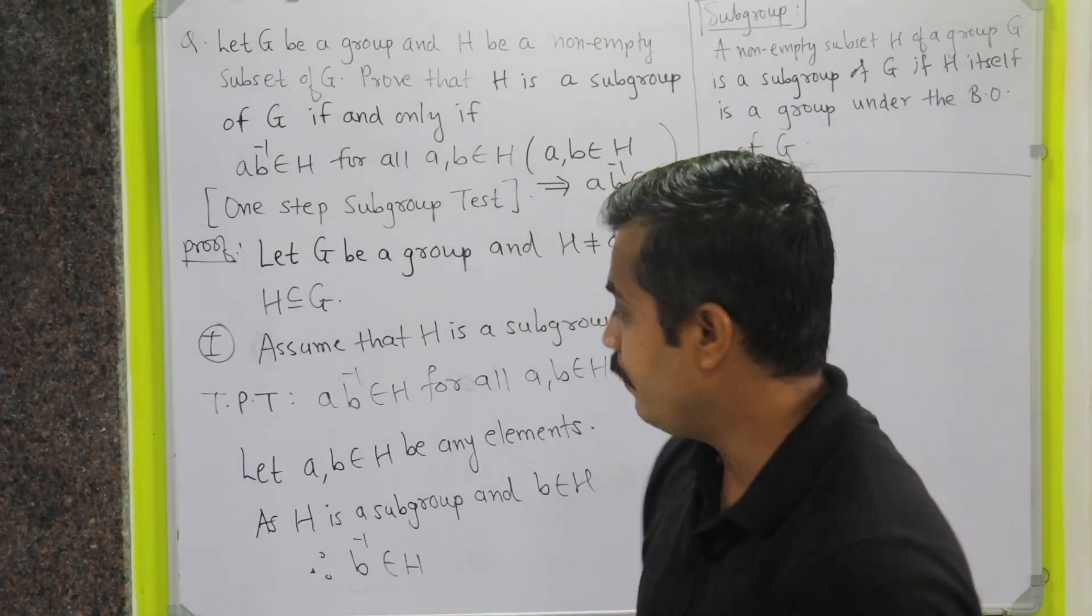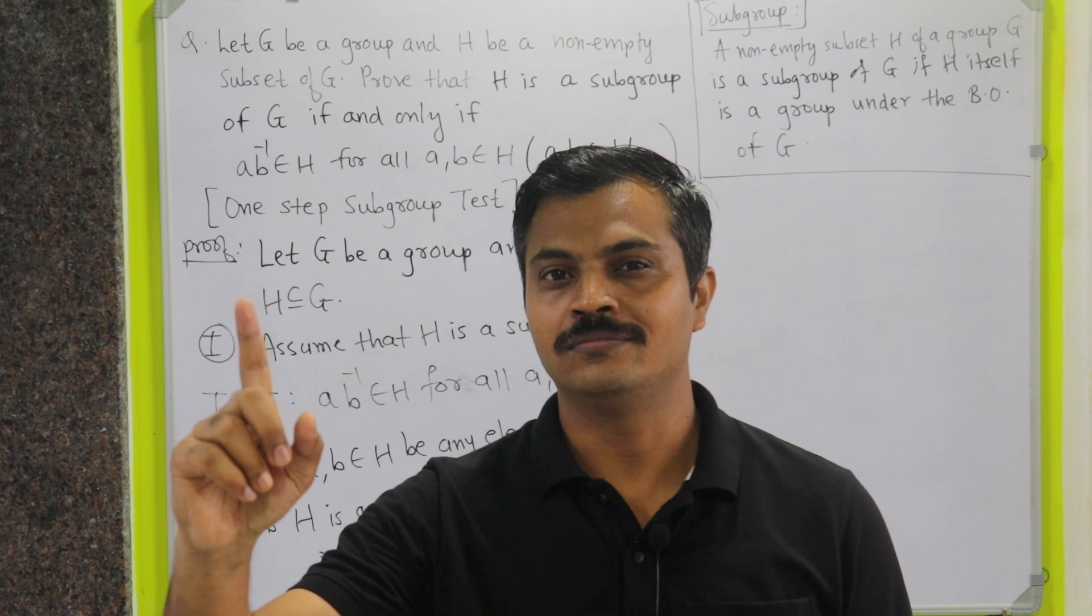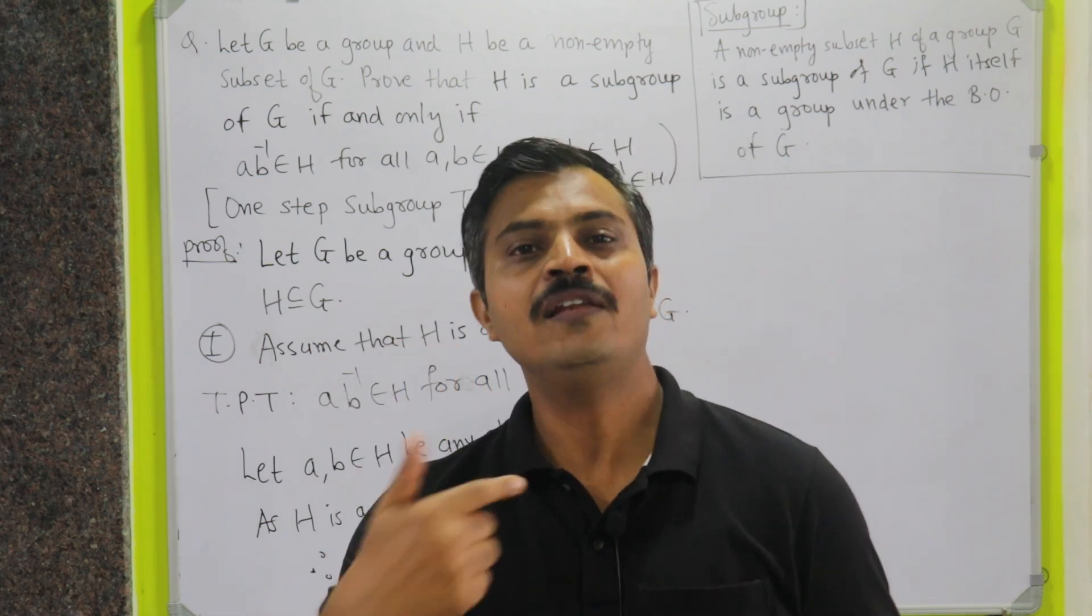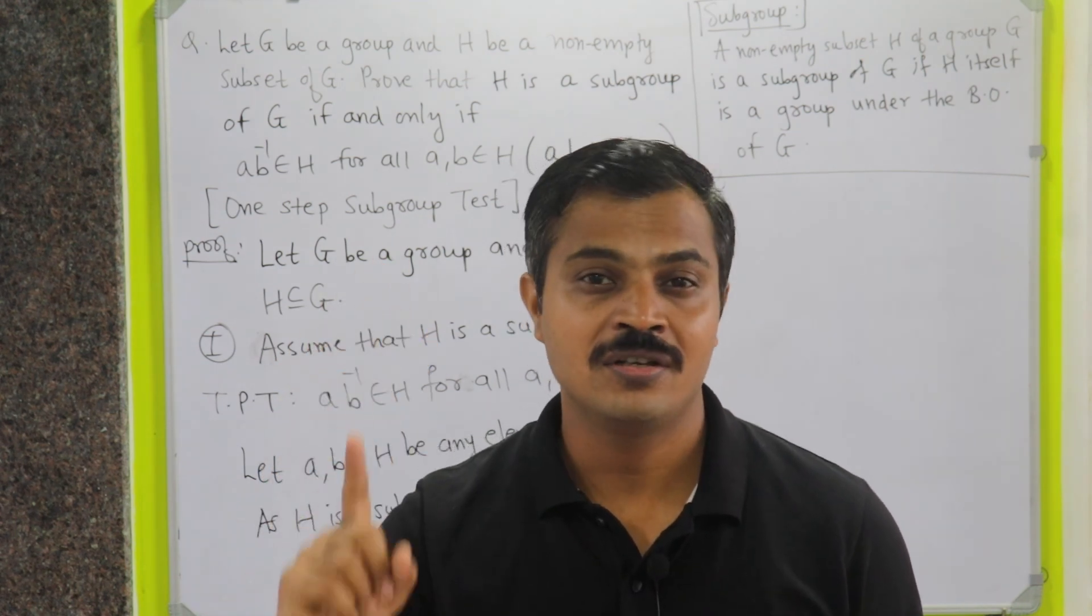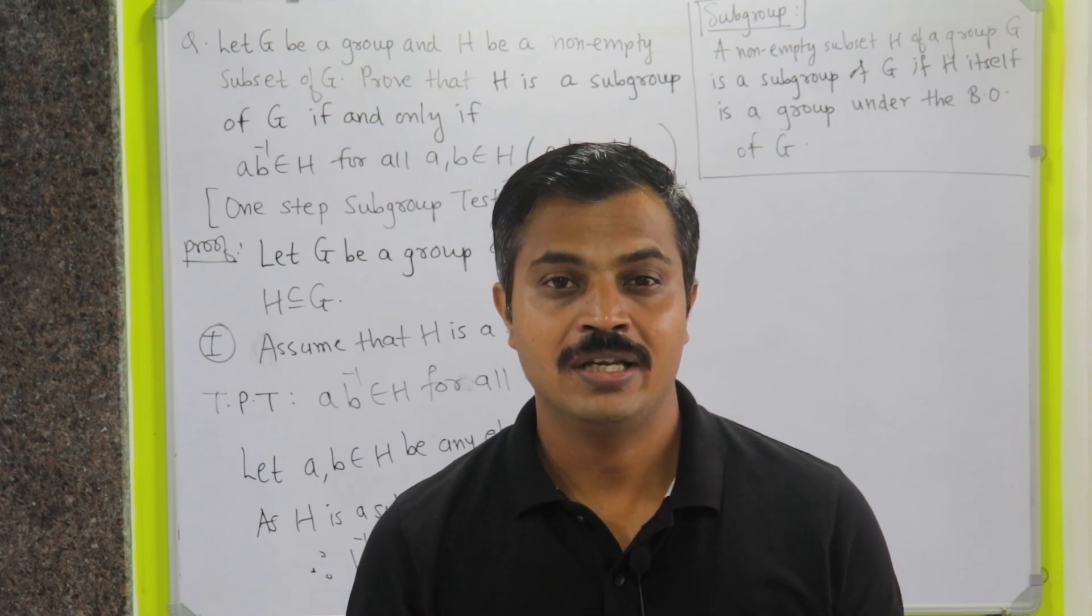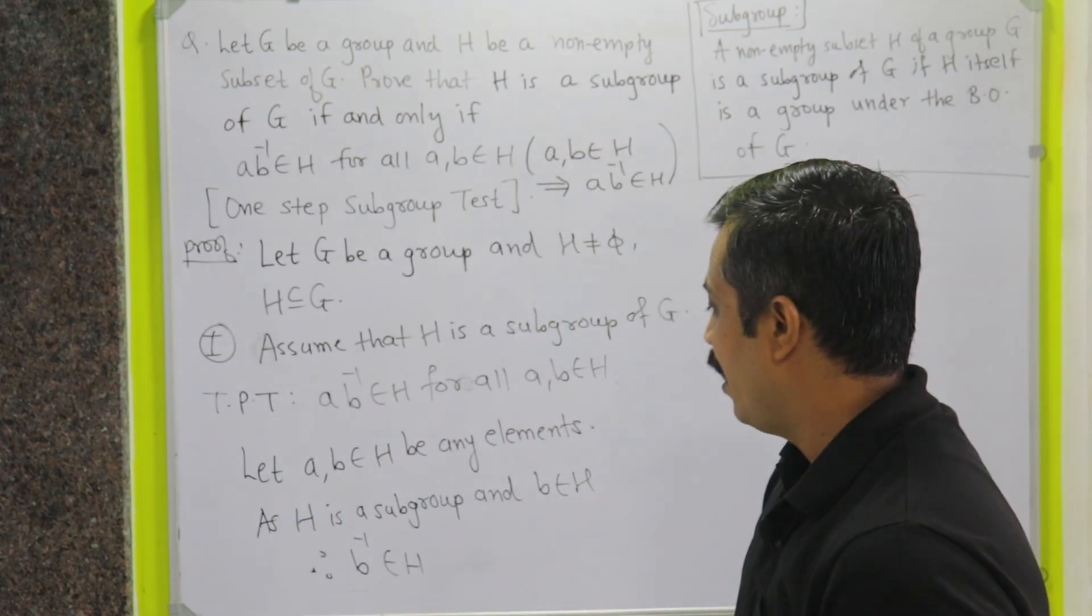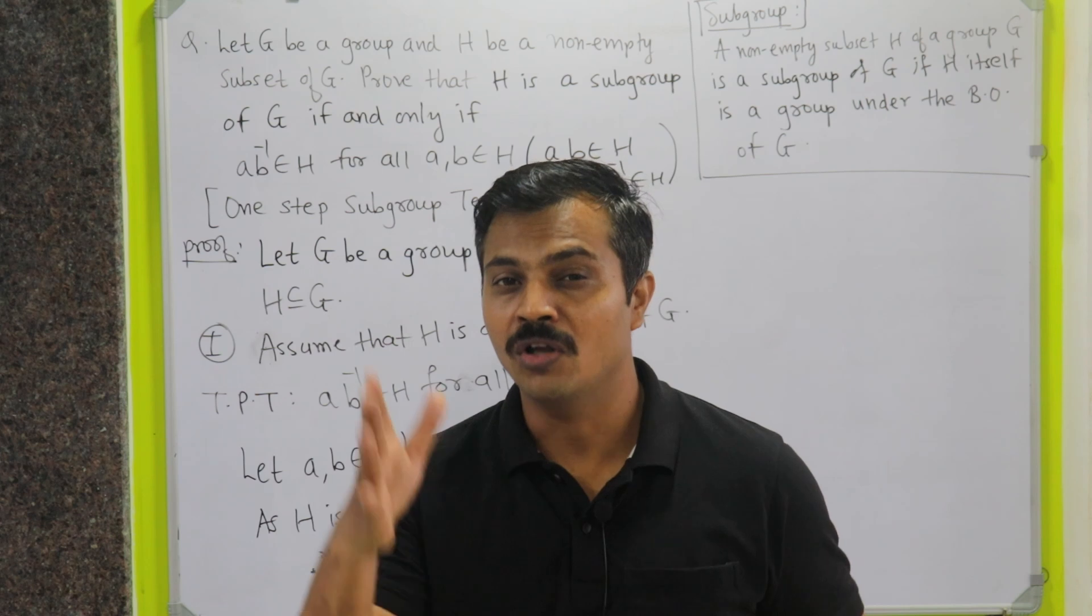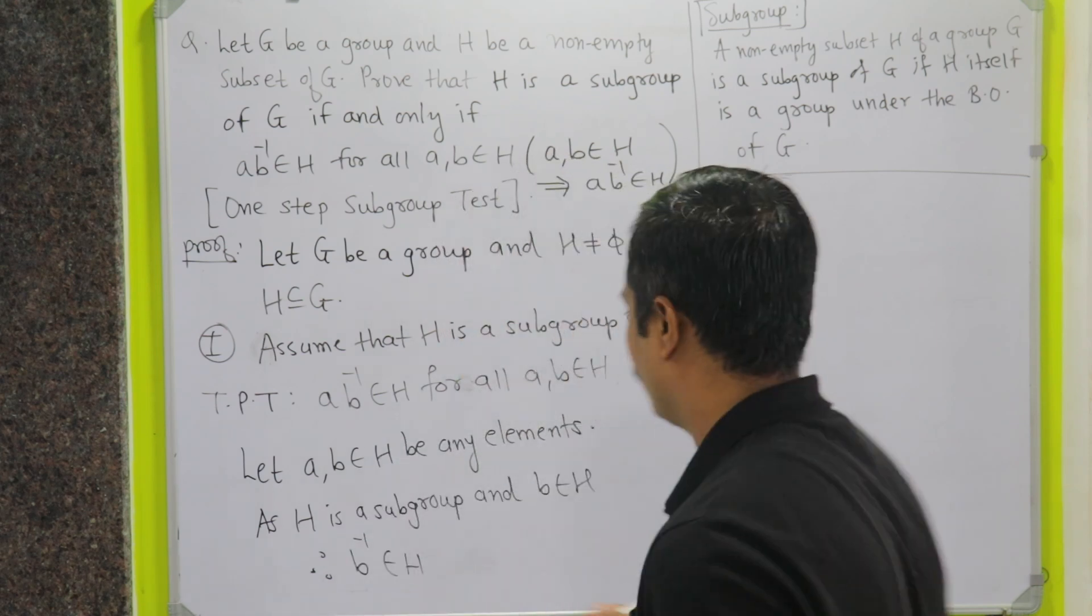Now here we are having A as an element of H as well as B inverse as an element of H. But remember, our assumption is H is a subgroup of G, means H itself is a group. It means H is non-empty and we have a binary operation on H. What is the meaning of binary operation on H? If you take two elements of H, let us call it A, B, then A dot B is also in H. Here A and B inverse are elements of H, so their multiplication AB inverse will also lie in H, and this follows from the fact that multiplication is a binary operation on H.